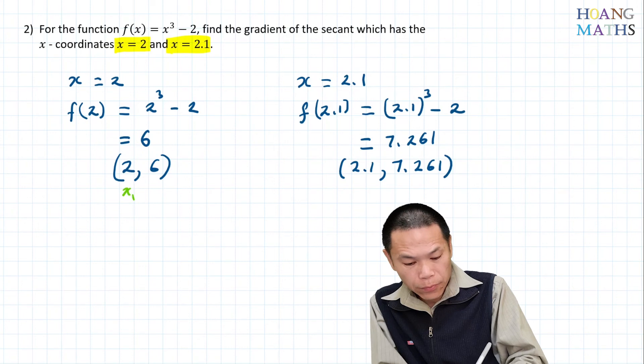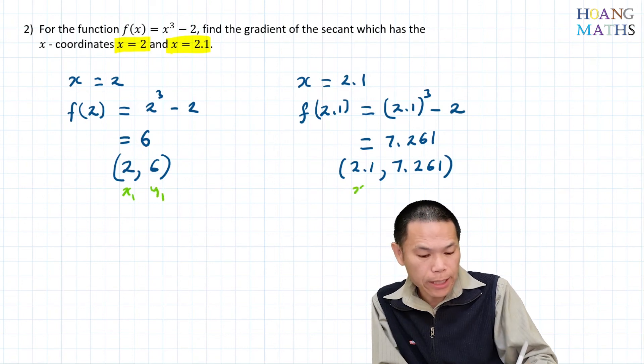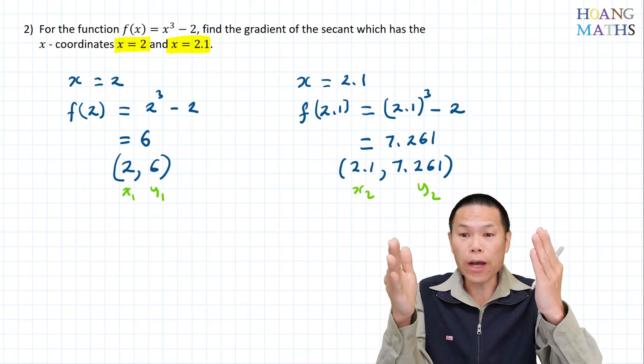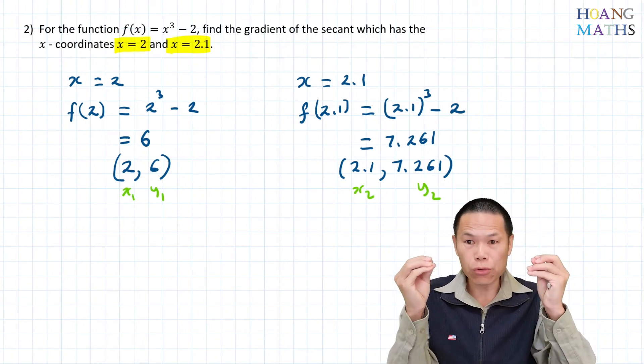So we have (2.1, 7.261). Let's name the first point (x₁, y₁) and this one (x₂, y₂). Now we need to find the gradient of these two points.